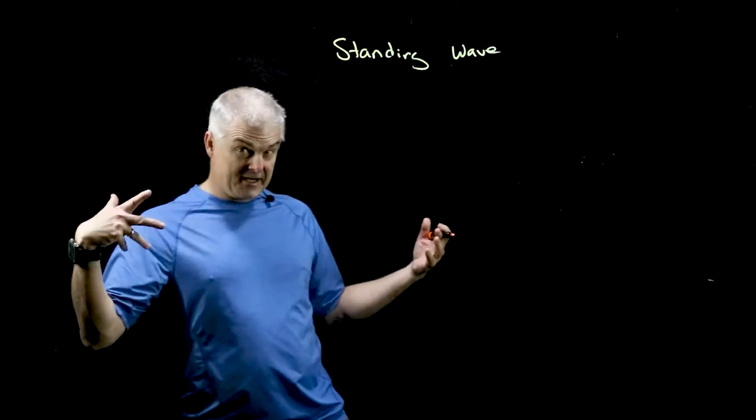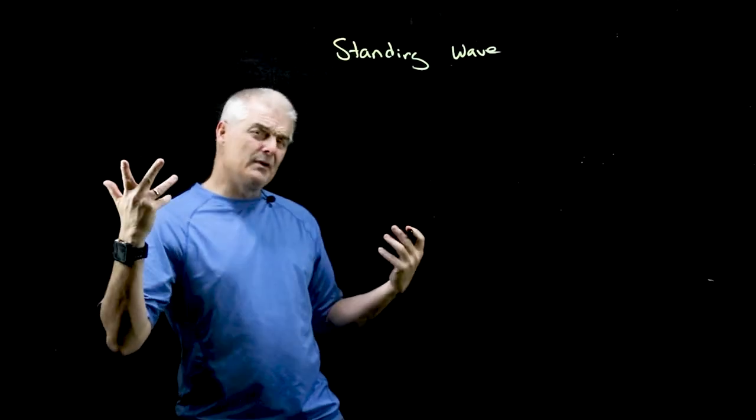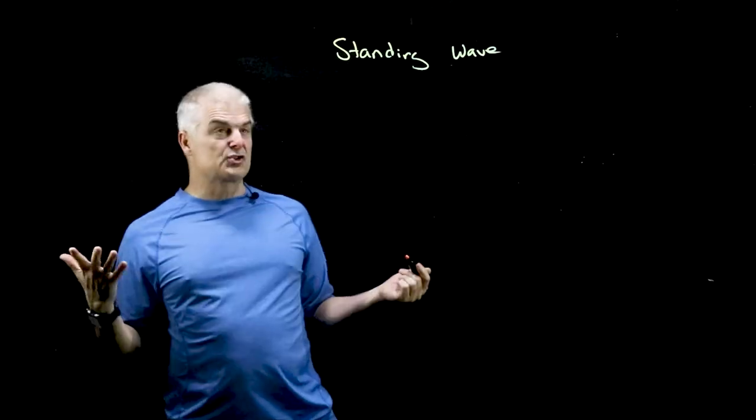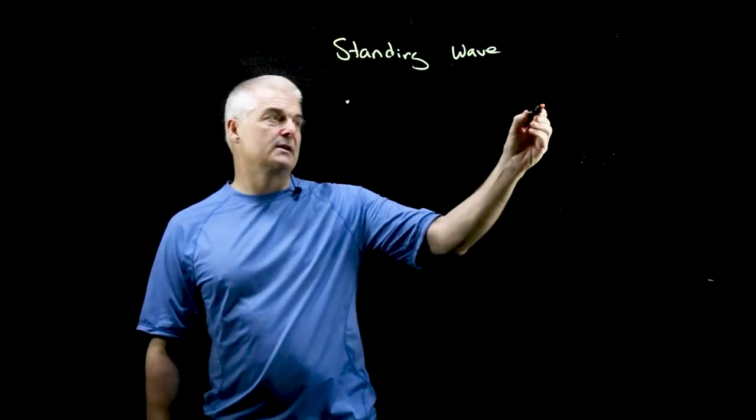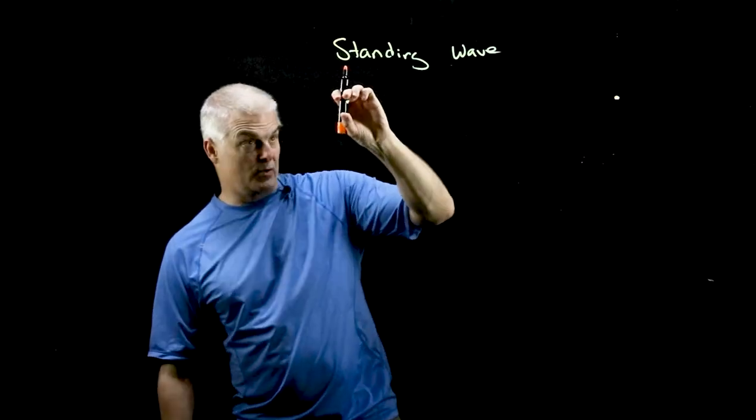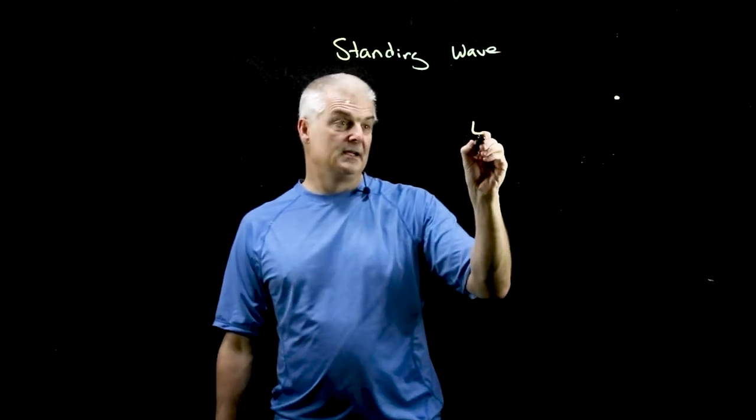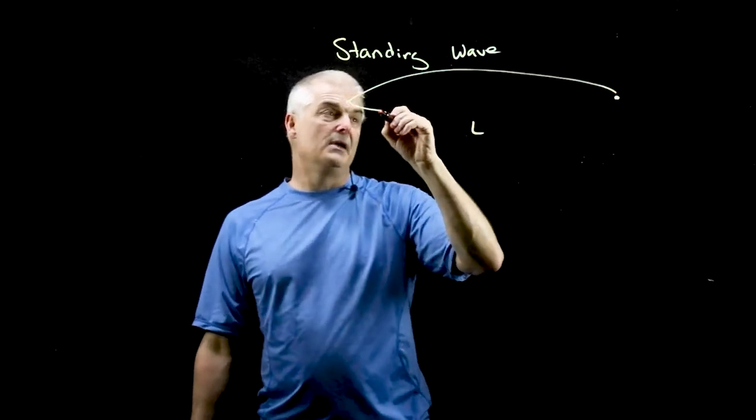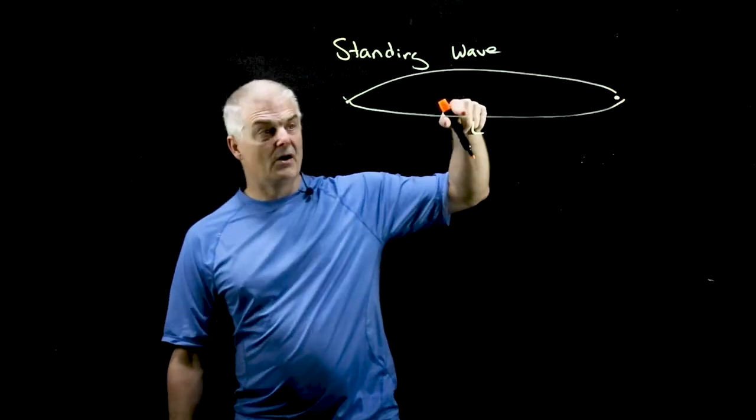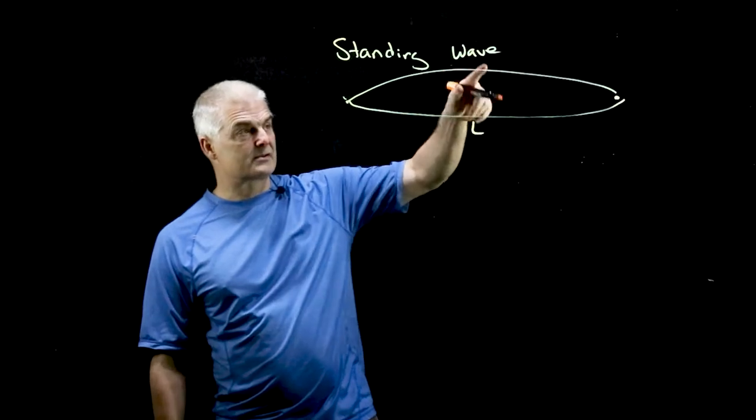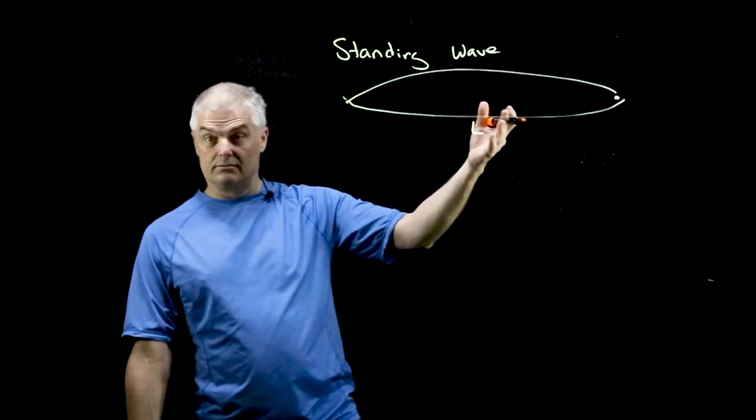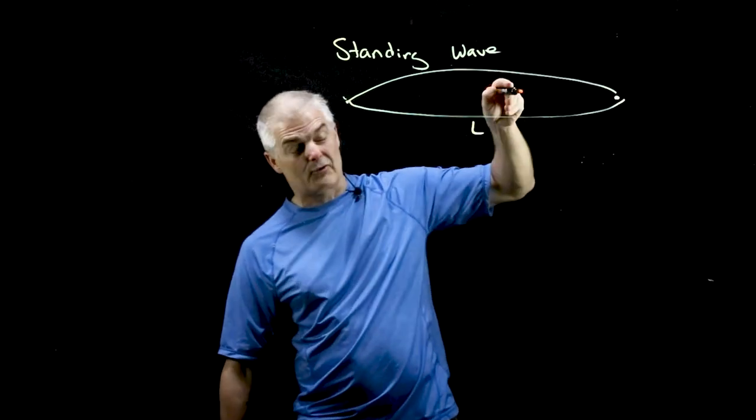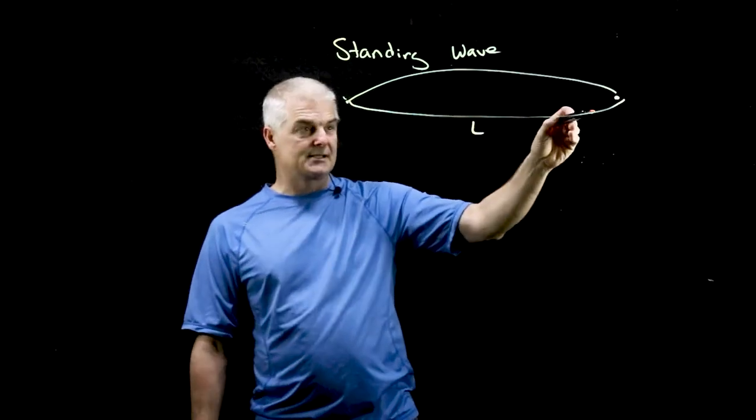Now standing wave sounds like it's standing, like not moving, and it's moving but not moving. The classic example is the string on a stringed instrument. In a stringed instrument, you have a string that's of length L, but when you pluck that string, it oscillates back and forth like this. And it's going back and forth, it looks like it's standing, even though it's going back and forth pretty fast.